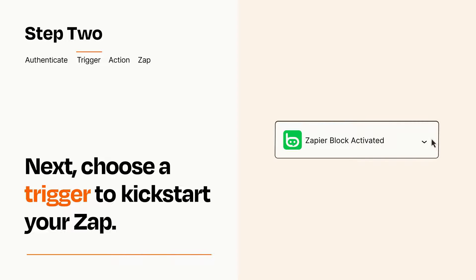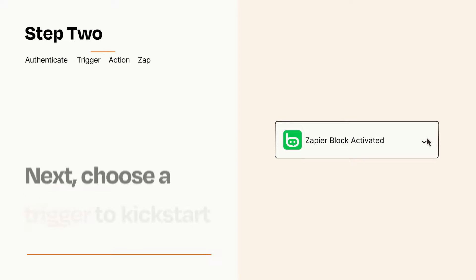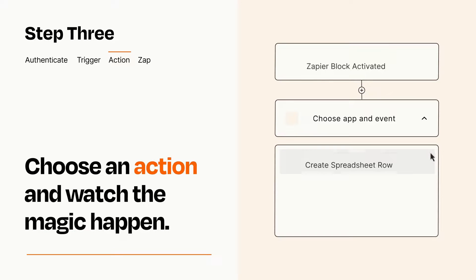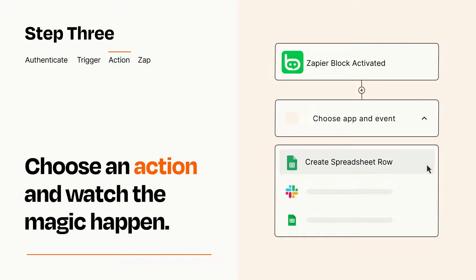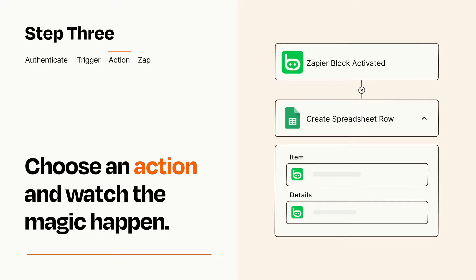This last part is where the magic happens. Choose the action you want to happen in your target app. You'll see a bunch of fields where you can specify the details of your Zap. You can type free form text or pull data in from your trigger step as needed.